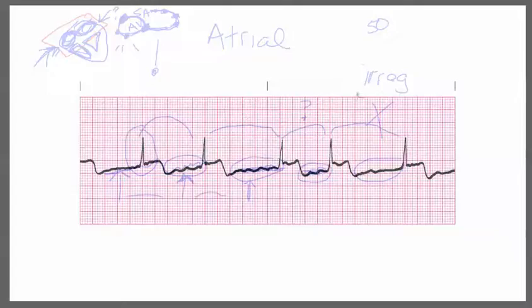The big key with atrial fibrillation is that it is the one rhythm that is completely irregular. So this is atrial fib at a rate of 50. It is definitely below 100, so we would consider this controlled AFib.